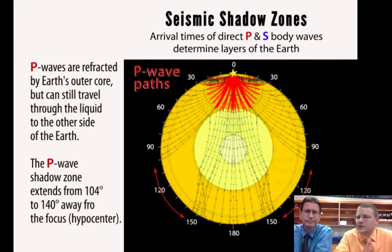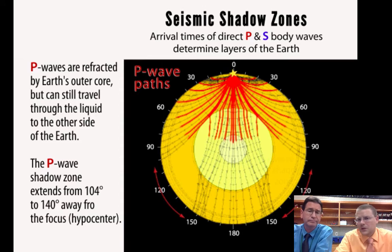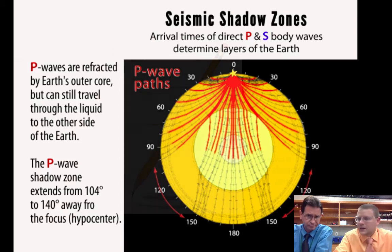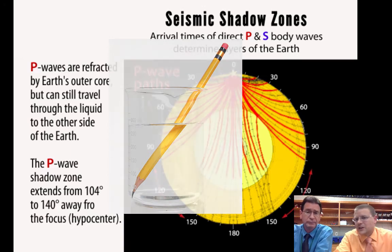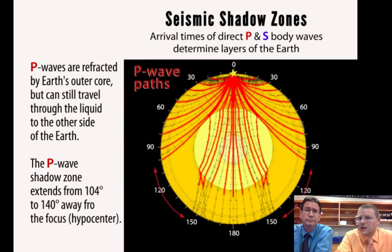So when the P waves, primary waves, hit different layers of the Earth, this is how we kind of figured out there was a core, an inner core, a mantle. The waves bend, kind of like a pencil bends in water. You get this refraction or this bending of light waves. You get the bending of earthquake waves through the Earth.